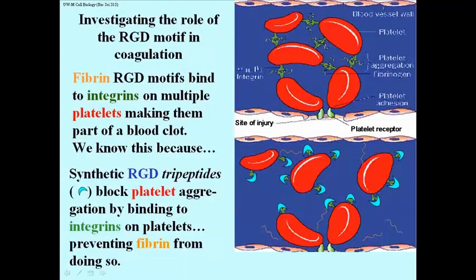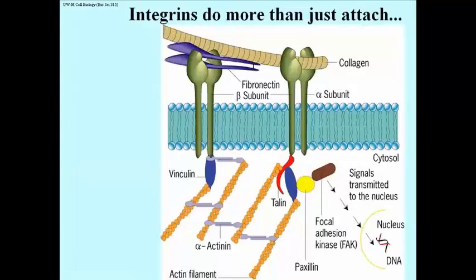So these synthetic RGD tripeptides block platelet aggregation by binding to the integrin on the platelets and displacing or preventing fibrin from doing so. That's an experiment that was done to show that the RGD motif is actually responsible for platelet recognition and aggregation.